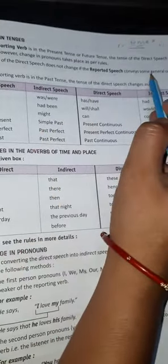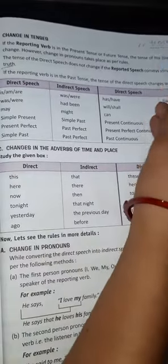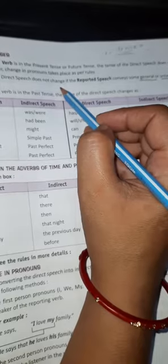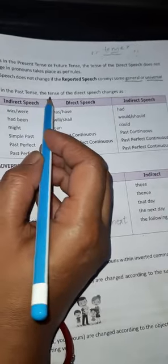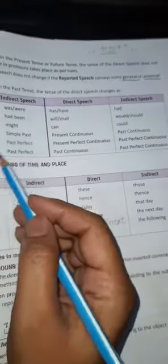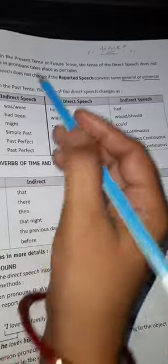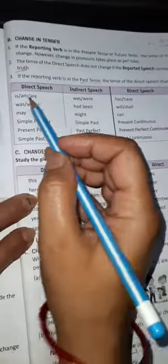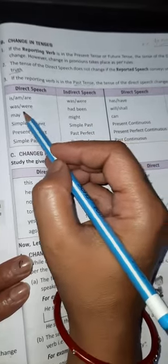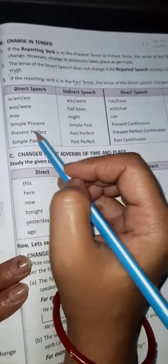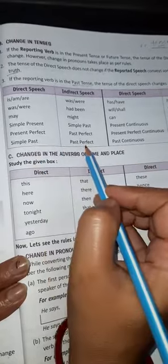Second point: the tense of the direct speech does not change if the reported speech conveys some general or universal truth — if a general or universal truth is stated inside the inverted commas, its tense is not changed. Number three: if the reporting verb is in the past tense, the tense of the direct speech changes as follows. If the reporting verb is in the past tense, apply these rules: is/are changes to was/were, was/were changes to had been, may changes to might, simple present becomes simple past, present perfect becomes past perfect, and simple past also becomes past perfect.